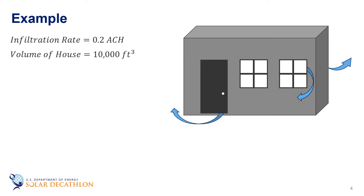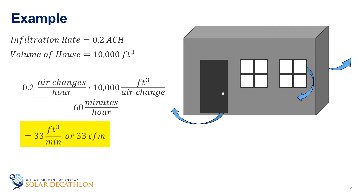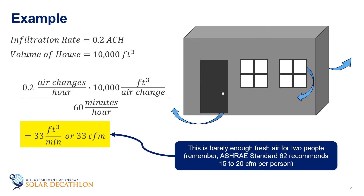The volume of this house was 10,000 cubic feet. For 0.2 ACH, we write that this is 0.2 air changes per hour and multiply it by 10,000 cubic feet per air change. We then divide by 60 minutes per hour, and the result is 33 cubic feet per minute, or 33 CFM. This is barely enough fresh air for two people, and this house is not that tight with current building standards. For reference, a very tight house would have an air exchange rate of 0.03 ACH, so this would yield 5 CFM, which is certainly not enough fresh air for occupants. The benefit is that energy consumption for infiltration is reduced 85% by going from 0.2 to 0.03 ACH.